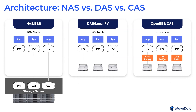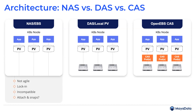Looking at the architecture, on the left side you have what is probably the case for most people: enterprise storage or cloud block storage from cloud vendors. It's hard-wired — you have a connection between your PV and the shared storage environment. The problem is it's not necessarily agile, you're locked in with one vendor, snapshots aren't compatible across platforms, and you have a dependency anchoring you in one place. If you use local disks or direct-attached storage, you still lack HA, still have lock-in, and no snapshot capability.